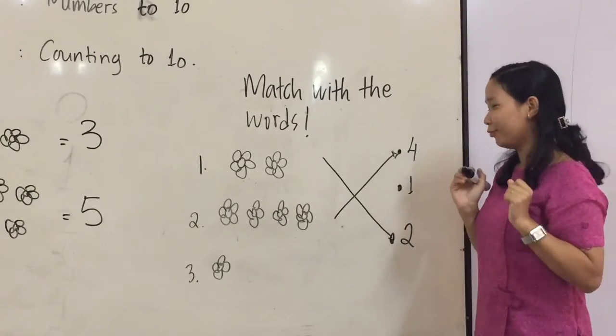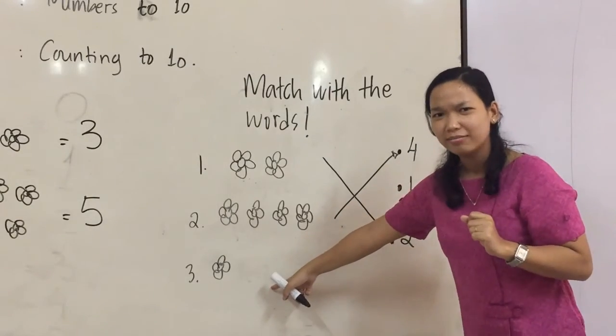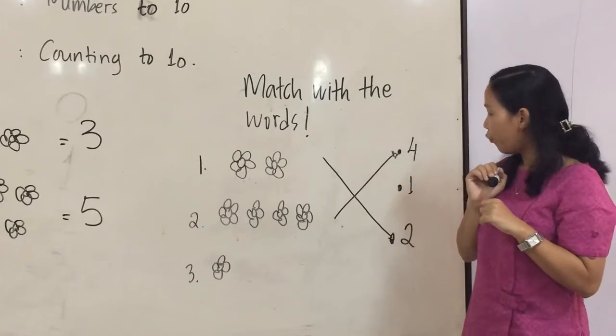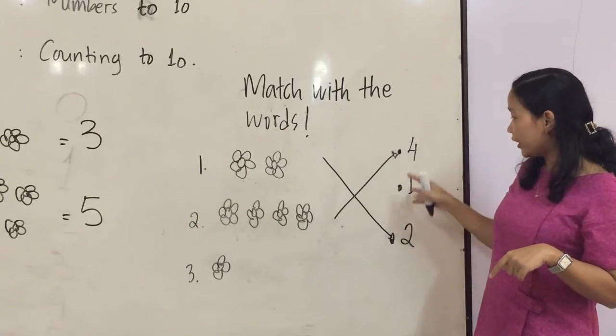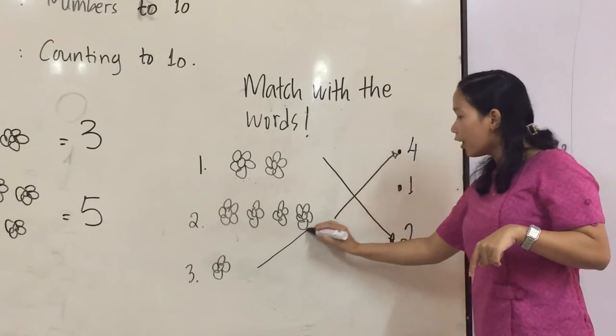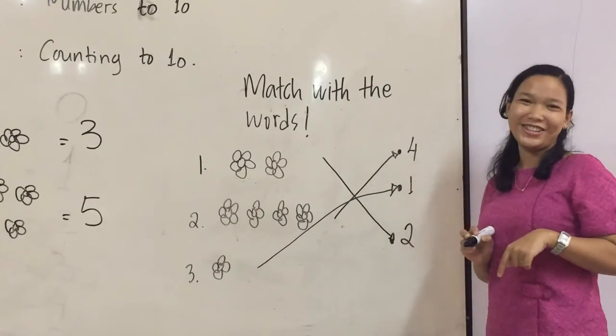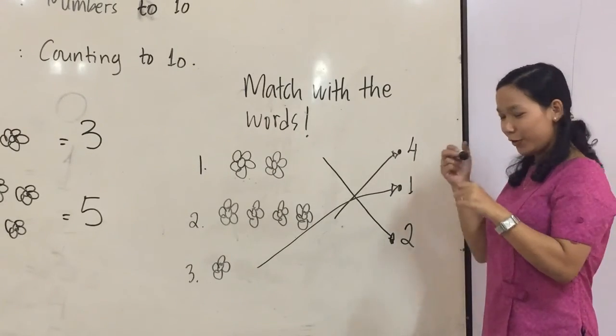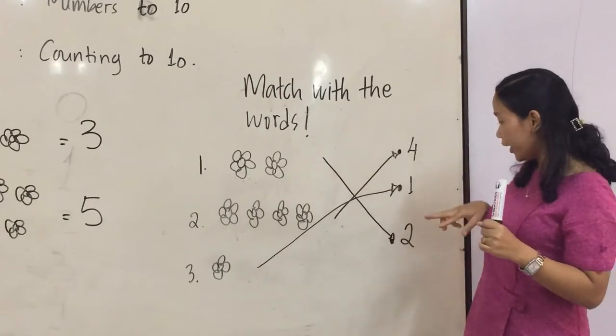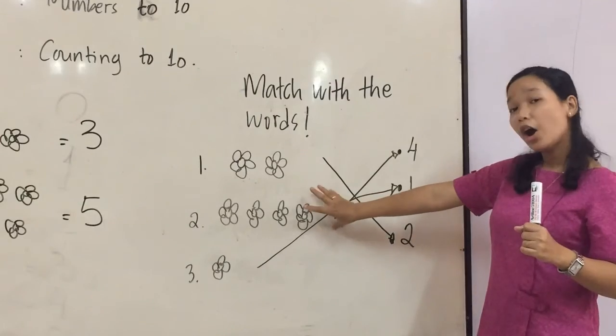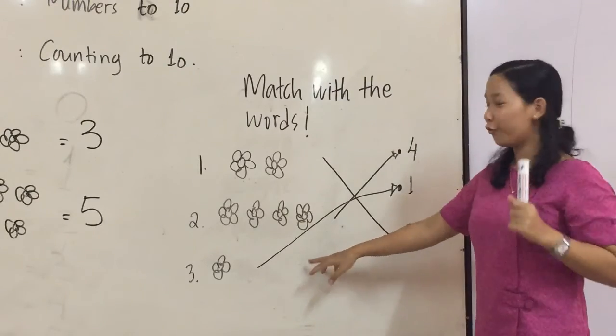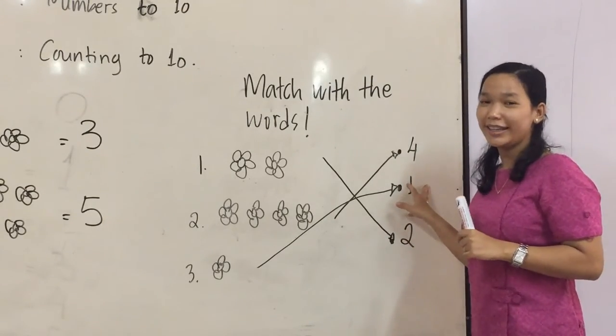Last one, fighting. So number three. Oh, only one. Can you show what flower is here? Can you find number one? Of course, here it is. So you have to draw the line. Look, here it is. So, look. Number one, there are two flowers. Number two, there are four flowers. And then number three, there is one flower. Yes, purple flower.